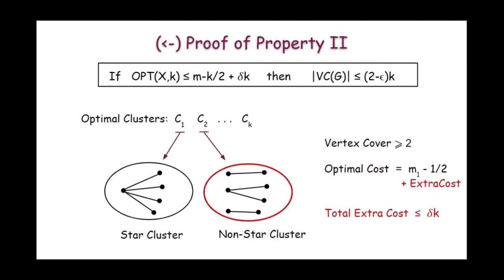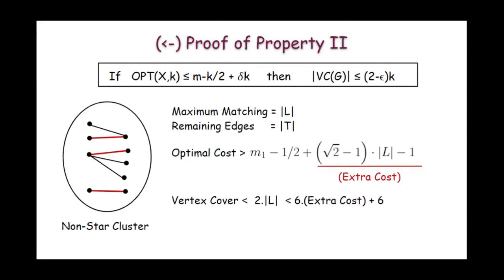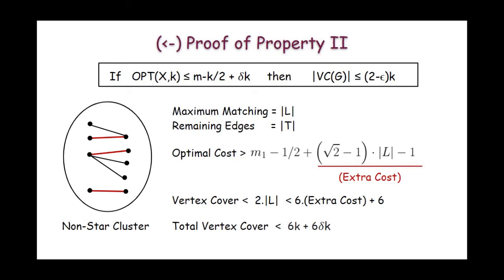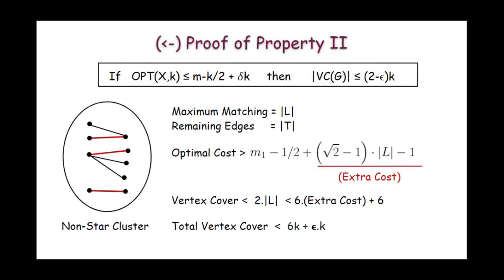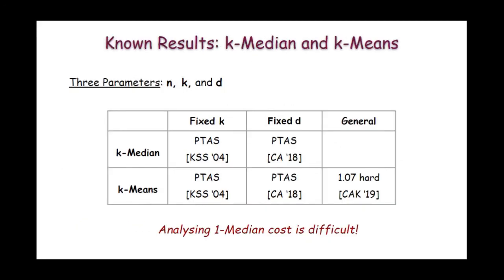Recall that the total extra cost over all clusters was at most delta*k, meaning the total vertex cover can be bounded as six times delta*k plus six*k. For appropriately small delta we can rewrite this as six*k plus epsilon*k. By doing a finer analysis of the vertex cover size and the optimal cost of the non-star cluster, we can obtain a better bound of less than (2 minus epsilon)*k. This completes the proof of property 2 and thus we obtain (1 plus epsilon) hardness of approximation for the k-median problem.